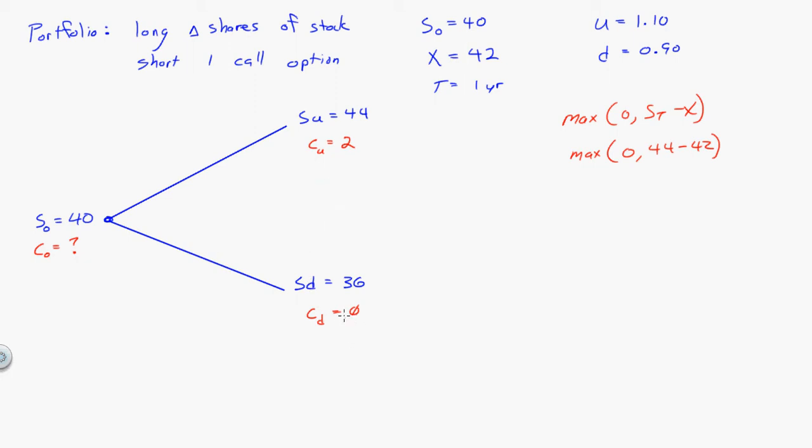How can I figure out what it's worth exactly? And the key insight here is I want to make this portfolio riskless. So I want to say I don't care if the stock price goes up or down, and that's the only two things that can happen. If it goes up, I own delta shares of something that's worth $44.